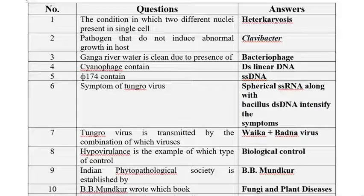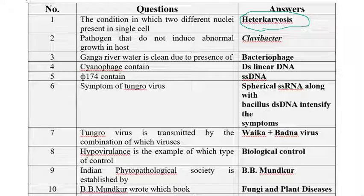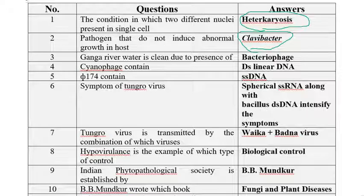The first question: the condition in which two different nuclei are present in a single cell is known as heterokaryosis — a standard definition. The next one: a pathogen that does not induce abnormal growth in a host cell — among the given options, Clavibacter is the pathogen which does not induce any abnormal growth. The next: Ganga river water is clean due to the presence of bacteriophages, which clean the river Ganga.